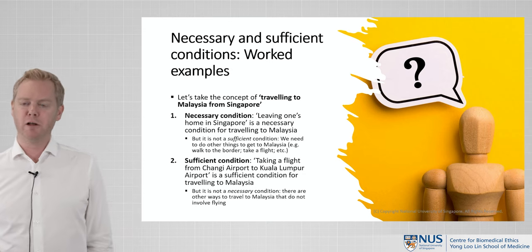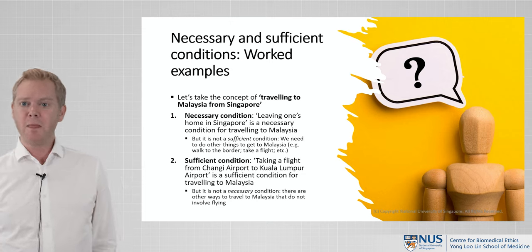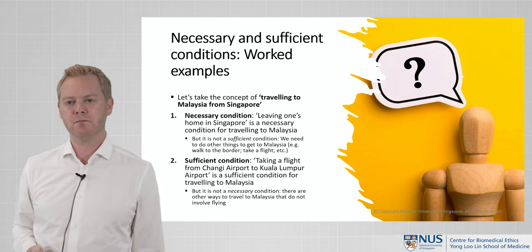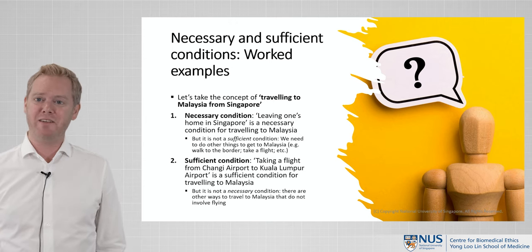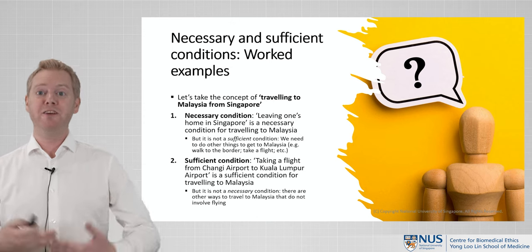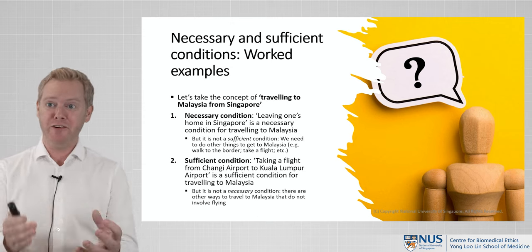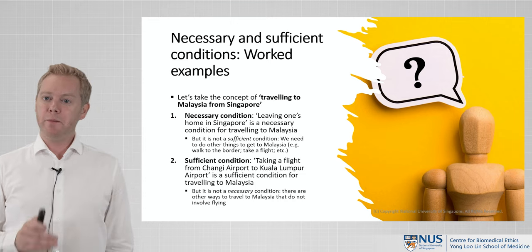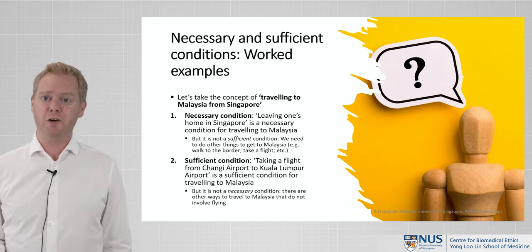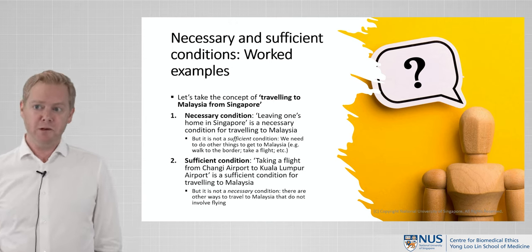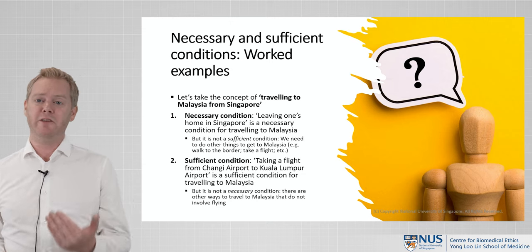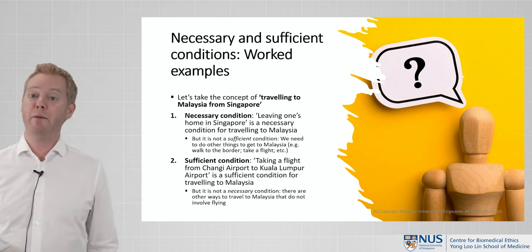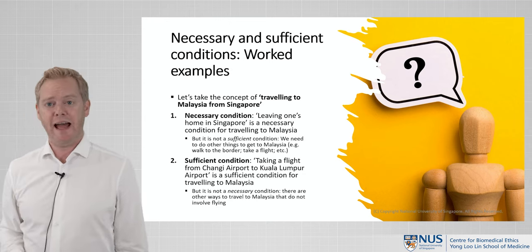Now let's look at what a sufficient condition might be. Take the claim that to travel to Malaysia from Singapore one must take a flight from Changi Airport to Kuala Lumpur Airport. I take that to be a sufficient condition — it's one way to sufficiently fulfil the conceptual requirement. But it's not a necessary condition, because there are other ways one could travel from Singapore to Malaysia that don't involve taking such a flight. So neither definition fulfils both the necessary and sufficient conditions for the concept.